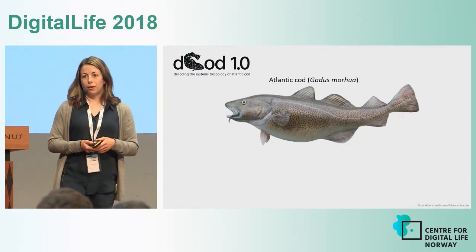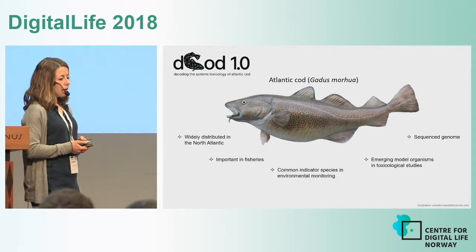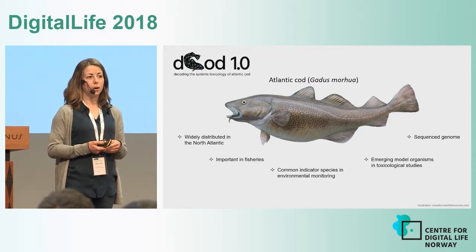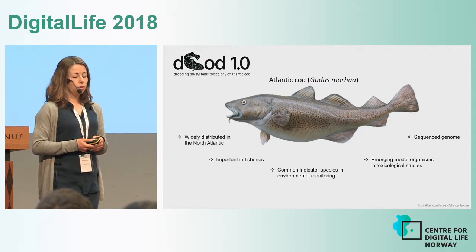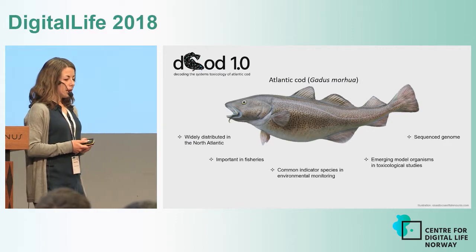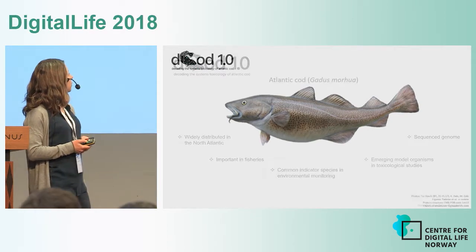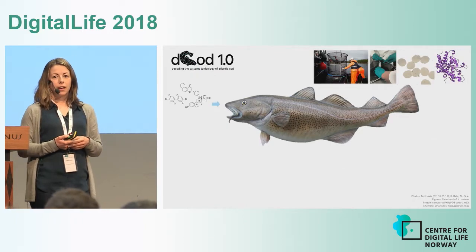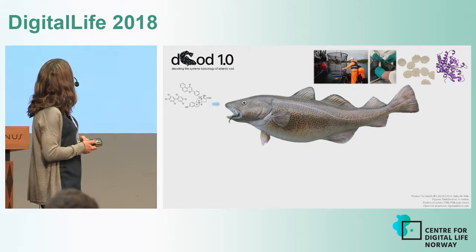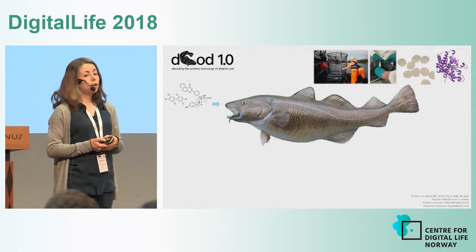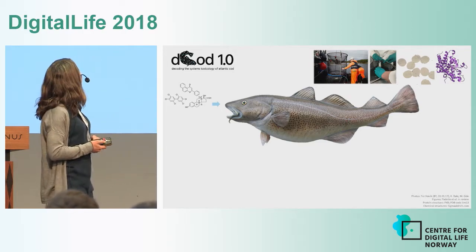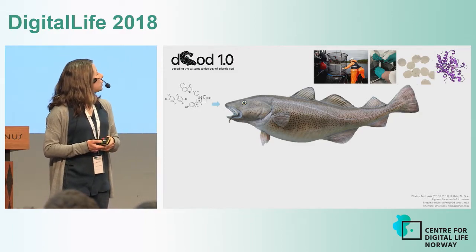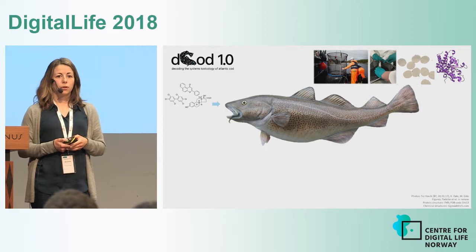The reasons for focusing our efforts on Cod are many. It is widely distributed in the North Atlantic Ocean, important in fisheries, a common indicator species, and also in 2011 the Cod genome was first sequenced and published. The project aims to understand the Cod's reaction and adaptation to environmental stresses. We use either wild-caught Cod, expose Cod in caging experiments or in the lab, or we use isolated liver tissues or isolated proteins.